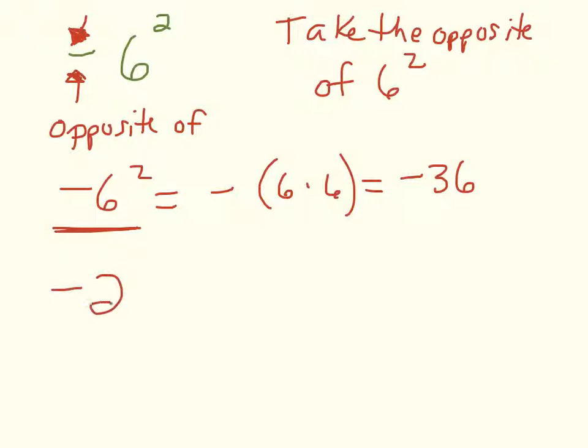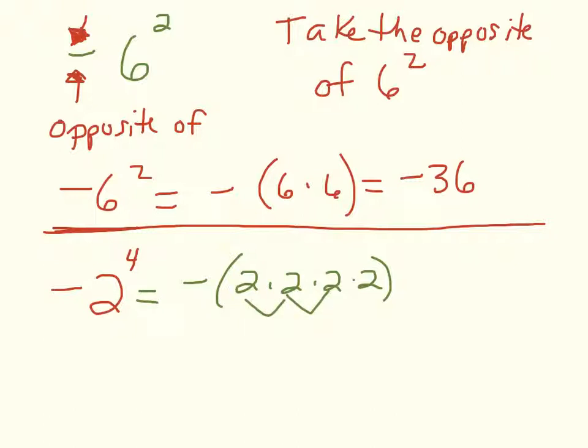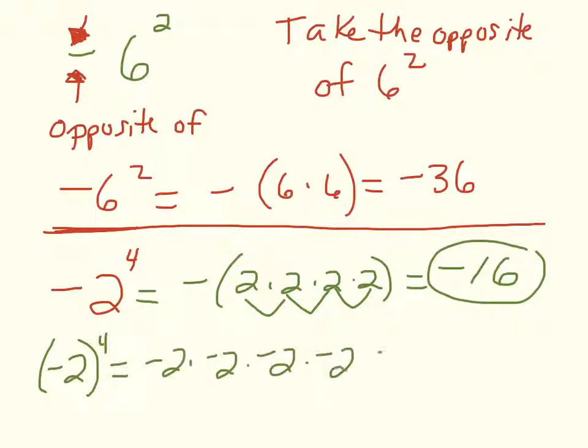What if we have negative 2 to the 4th, which I would correctly read as saying take the opposite of 2 to the 4th. We are taking the opposite of 2 times 2 times 2 times 2. That's 4 times 2 is 8, times 2 is 16, so we get negative 16. It's a lot different than if we had negative 2 in parentheses to the 4th, because then we multiply negative 2 times negative 2 times negative 2 times negative 2, which gives us positive 16. So you can see why it's really important.